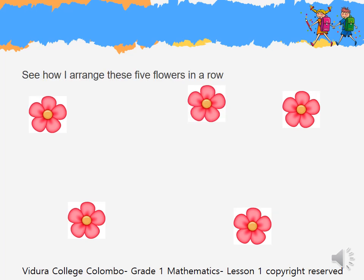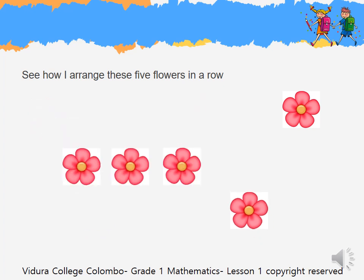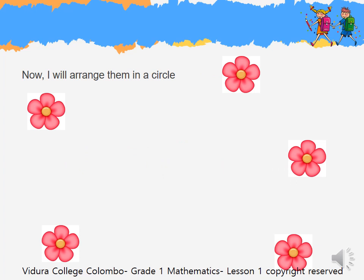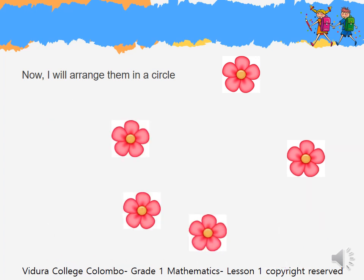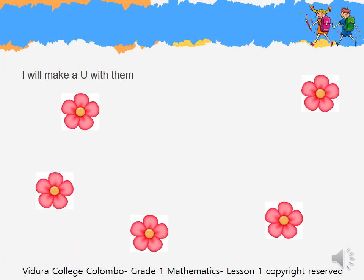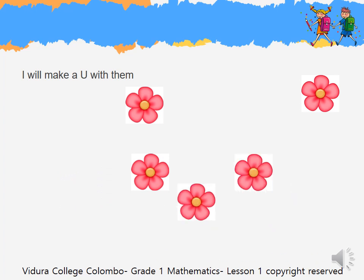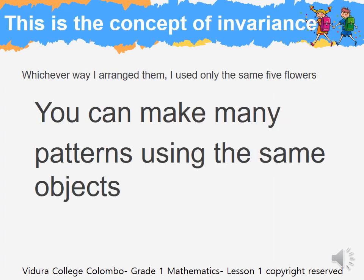See how I arrange these 5 flowers in a row. Now I will arrange them in a circle. I will make a U with them. This is the concept of invariance. Whichever way I arranged them, I used only the same 5 flowers. You can make many patterns using the same object.